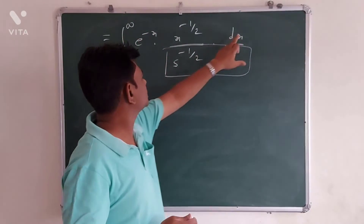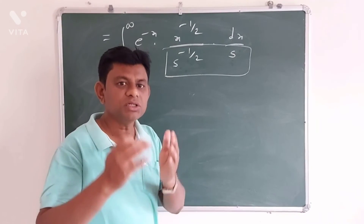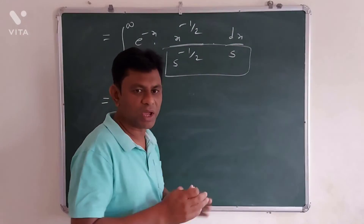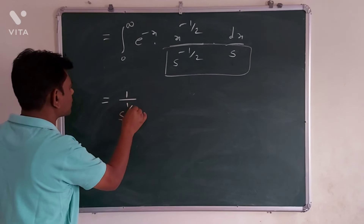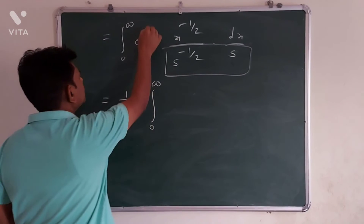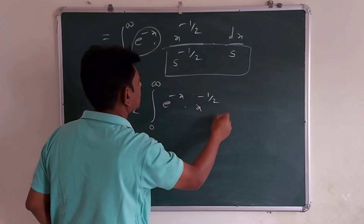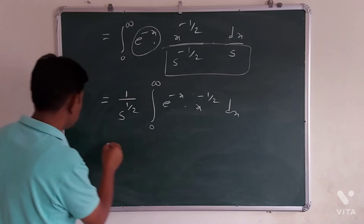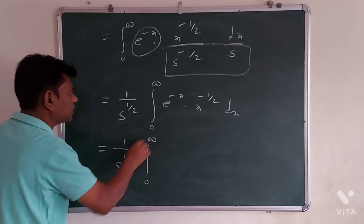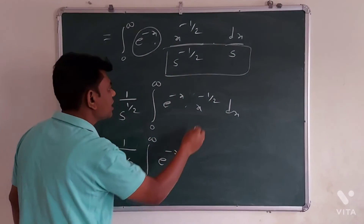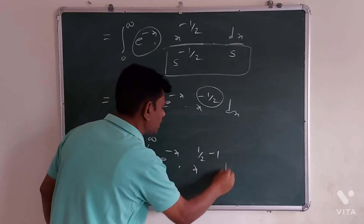This integration is with respect to x, so 1 upon s to the power half is a constant term and can be taken outside the integration. Therefore, we have 1 over s to the power half times the integration from 0 to infinity of e to the power minus x times x to the power minus half dx. We rewrite the exponent minus half as 1 by 2 minus 1.